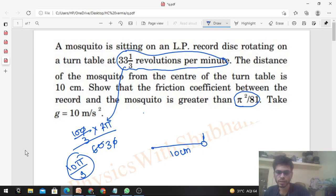So it needs a centripetal acceleration. Friction will be m times omega squared times r. Now, this friction you can see is static friction, because the mosquito is at rest with respect to the disc. So the friction between the mosquito and the disc will be static friction, and you can find out this value.